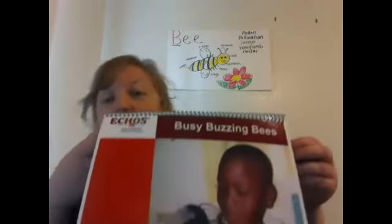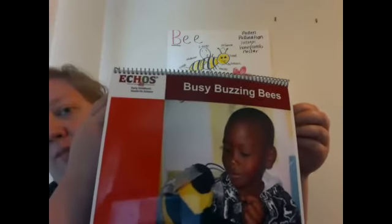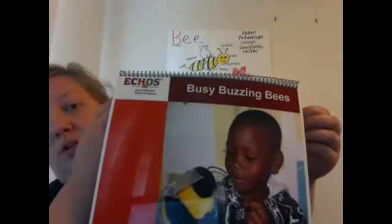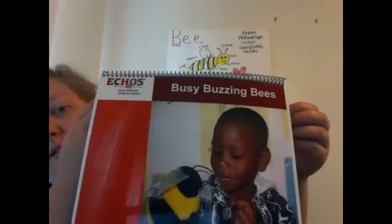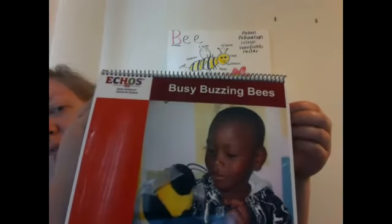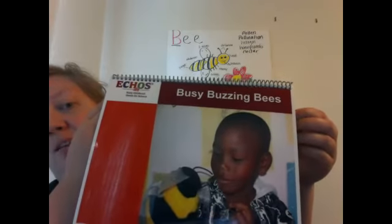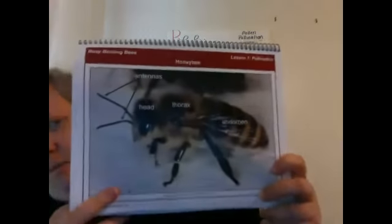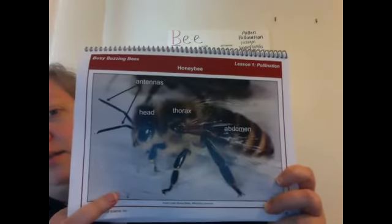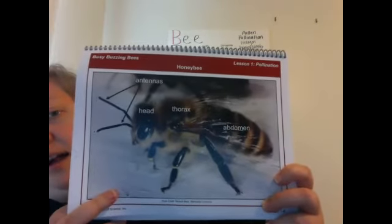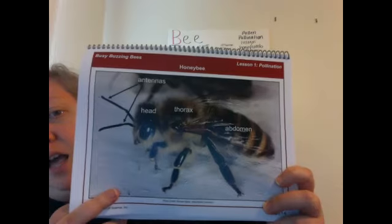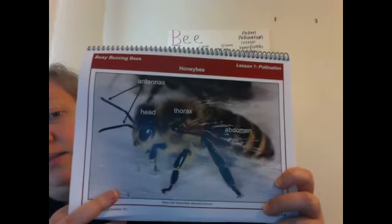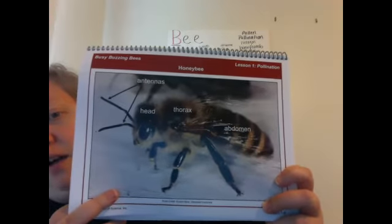At school we teachers use this book from the ECHOS, which is an early childhood hands-on science book, and this one is called Busy Buzzing Bees. So I'm going to show you a couple pictures. Just as a reminder, there's a close-up picture of a bee with all their parts — the head, the thorax, the abdomen, and the antennae. This is a close-up picture of a honeybee.